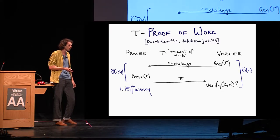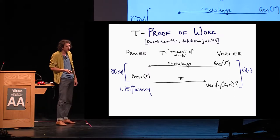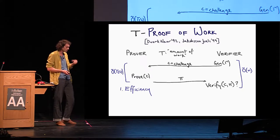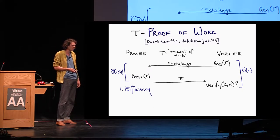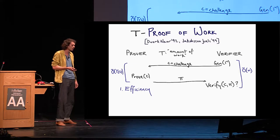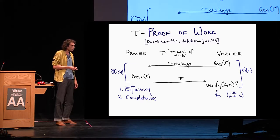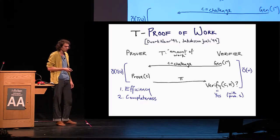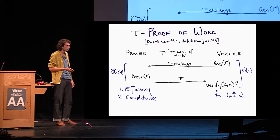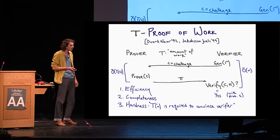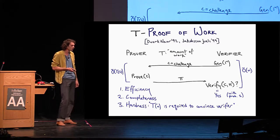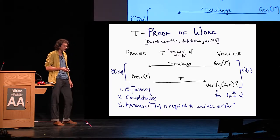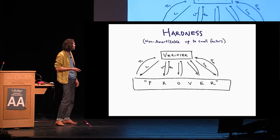And what sort of properties do we want here? First, we want efficiency. The honest prover should basically run in time t, and the verifier should be very efficient, linear in this parameter n. We want completeness, so the honest prover actually works and convinces the verifier. He always says yes when you run the honest prover. And finally, we want hardness. You can't cheat. If you do less than t work, you're unable to convince the verifier.